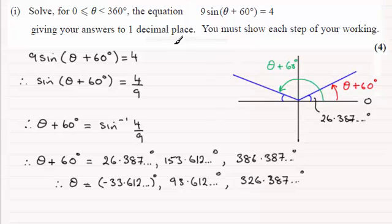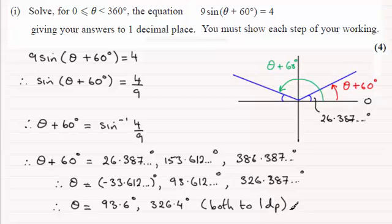We've got to give the answers to one decimal place. So if we do that, then we can ignore this answer. It's out of range. But for this one, we get 93.6 degrees. And for the other one, it's going to be 326.4 degrees. Both of these – we'll put both there – both are given to one decimal place, 1dp for short.